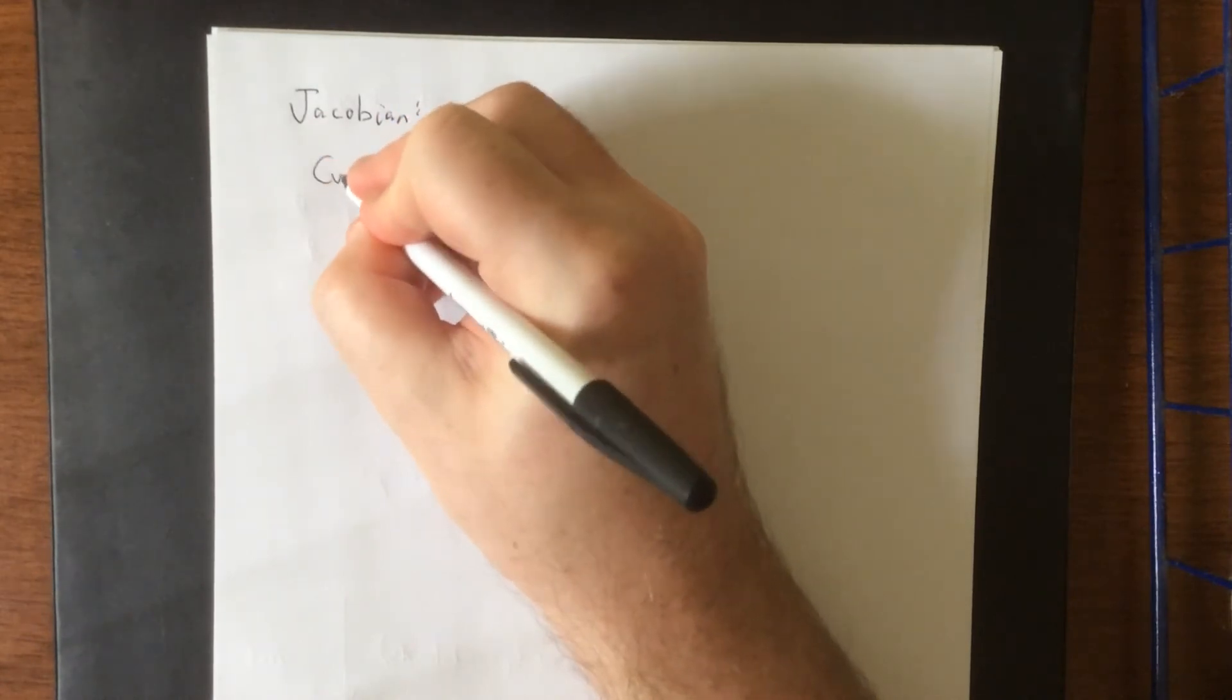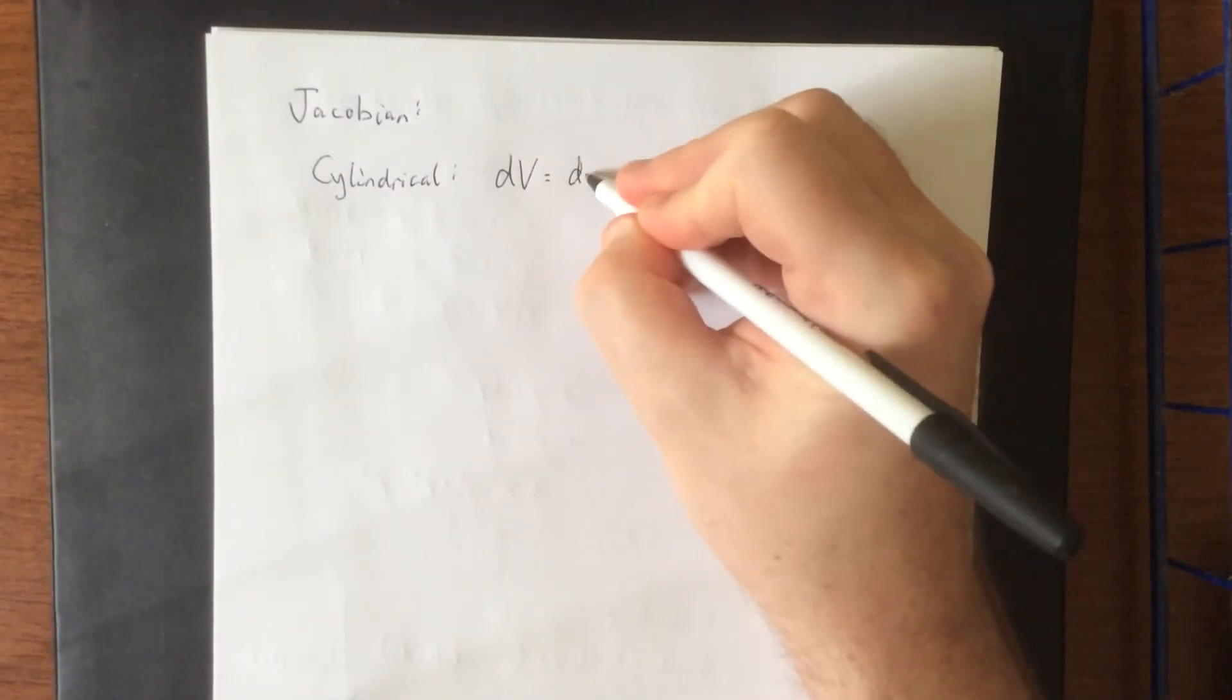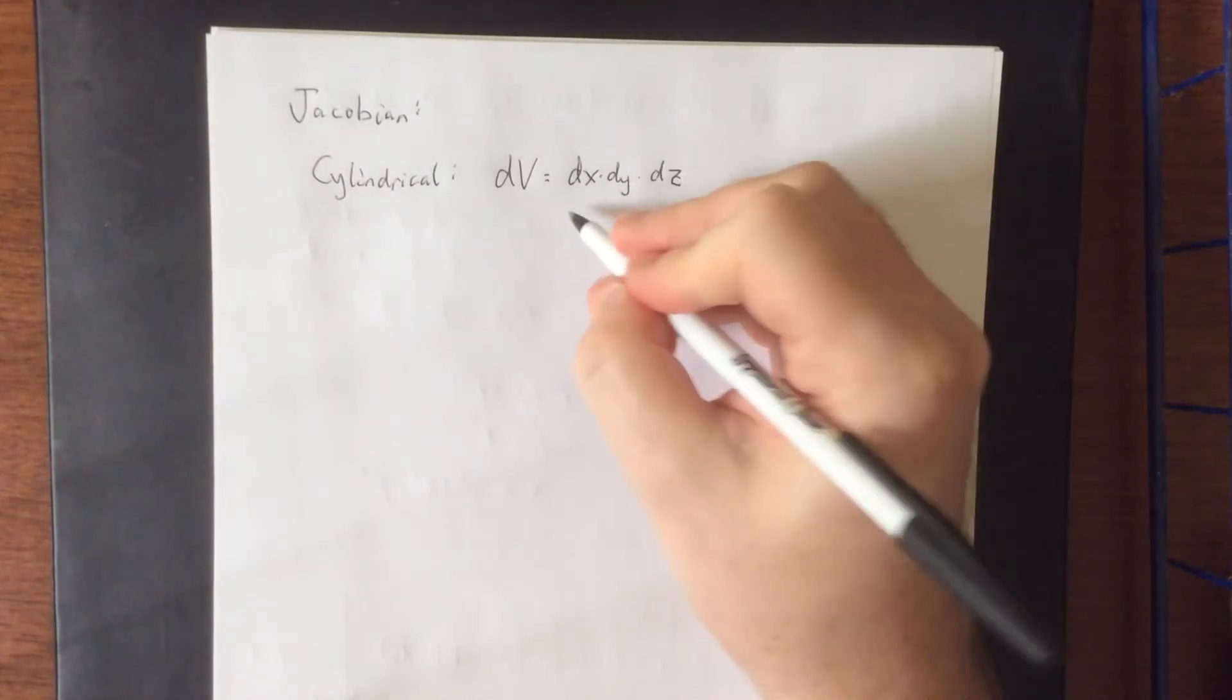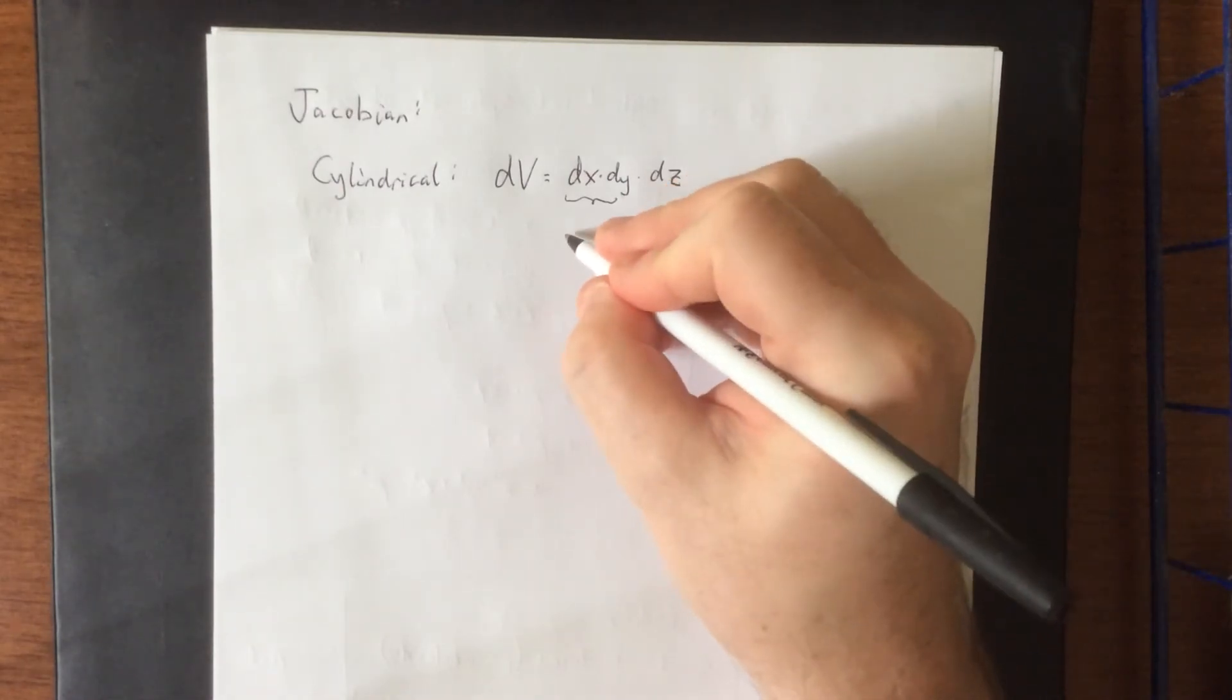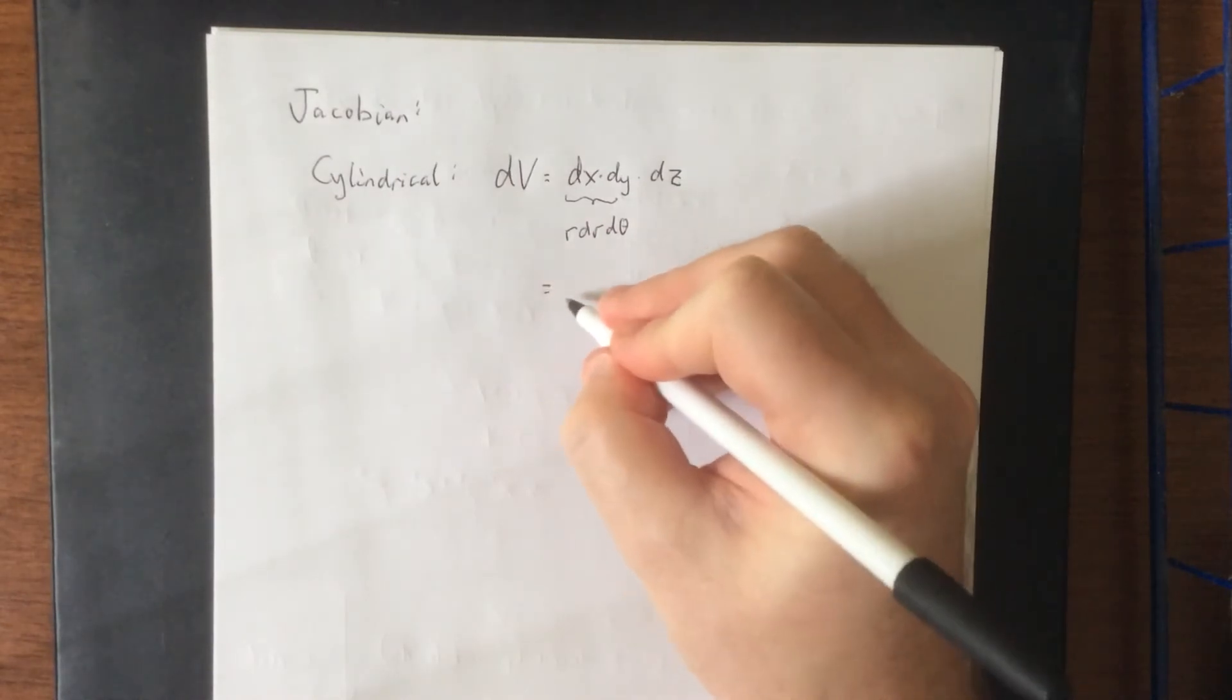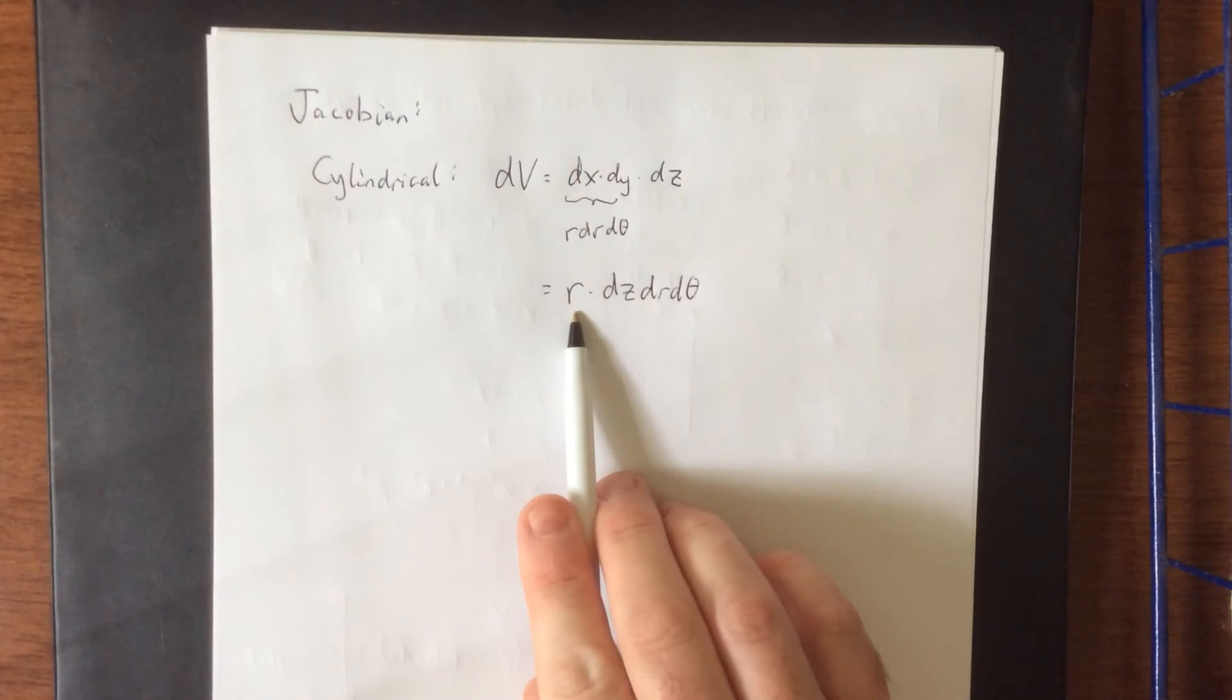So, for cylindrical coordinates, we defined dv to be dx times dy times dz in some order. X and y are the ones being converted into polar coordinates, and so we'll see the exact same thing done with this as what we saw in the polar coordinates section. This was r dr d theta. So, most frequently, this is going to be written as r dz dr d theta. So, the Jacobian of the cylindrical coordinate transformation would simply be r.